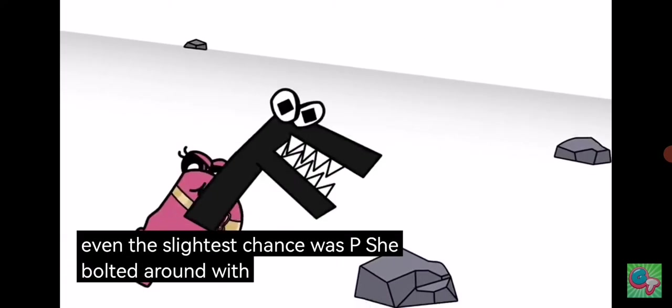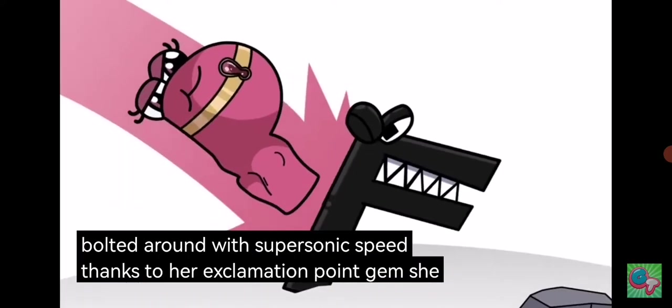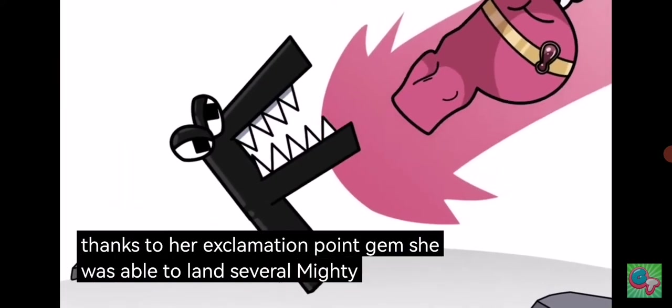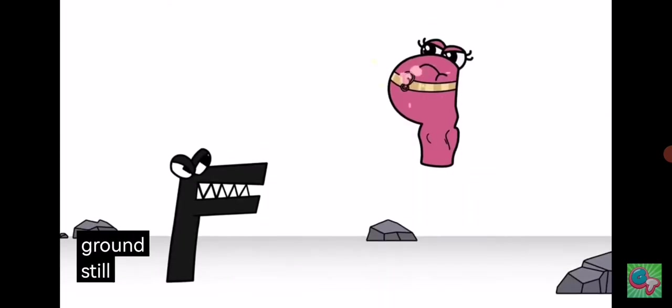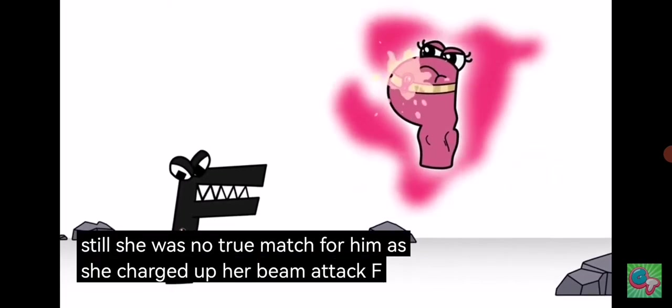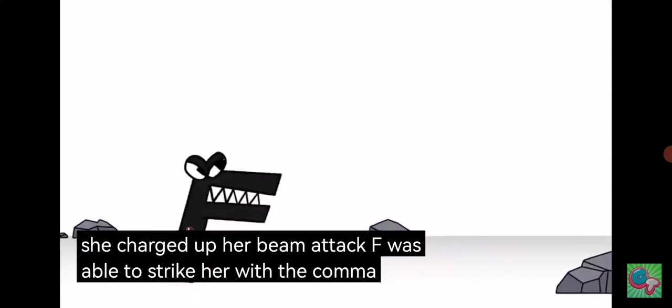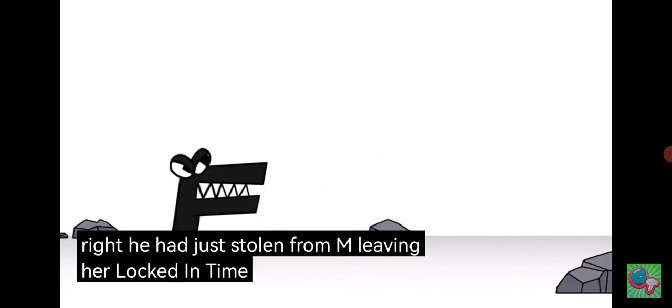The only one that stood even the slightest chance was P. She bolted around with supersonic speed thanks to her exclamation point gem. She was able to land several mighty blows against F, knocking him down to the ground. Still, she was no true match for him. As she charged up her beam attack, F was able to strike her with the comma freeze ray he had just stolen from M, leaving her locked in time.